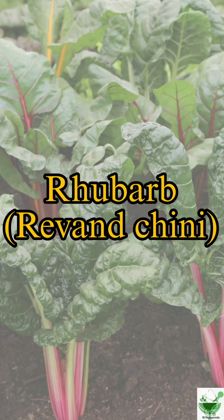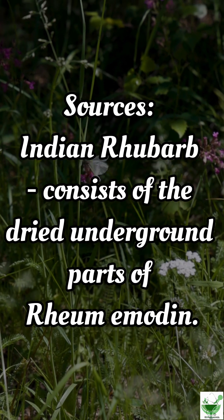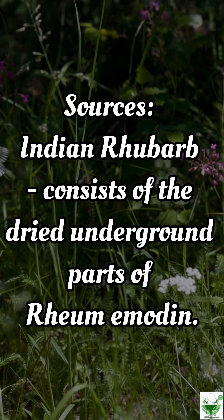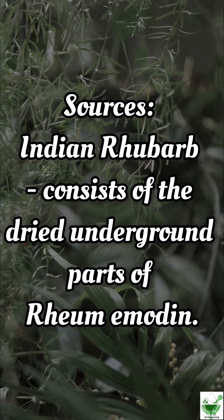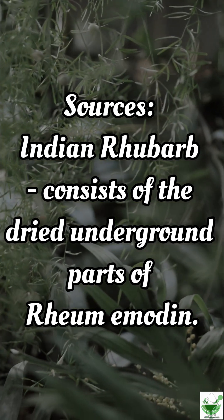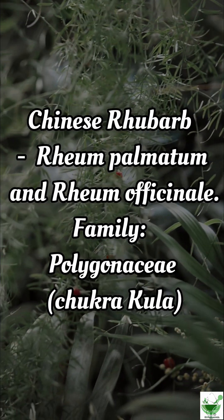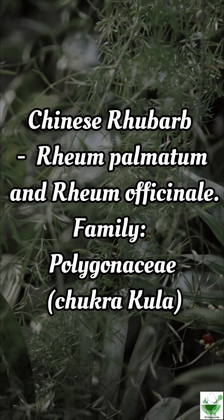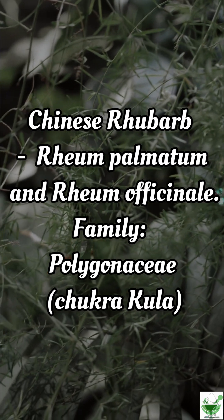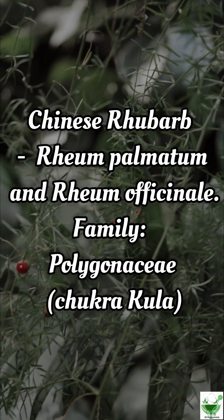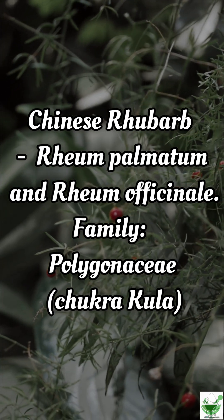Rhubarb, Revand Chini. Sources: Indian rhubarb consists of the dried underground parts of Rheum emodi. Chinese rhubarb: Rheum palmatum and Rheum officinale. Family: Polygonaceae, Chukracula.